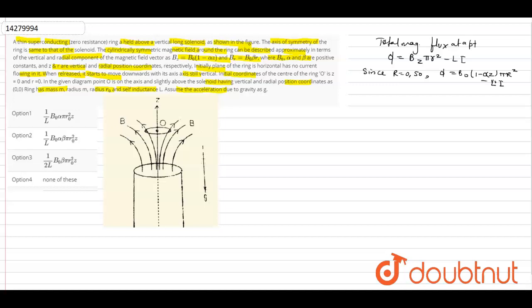So from initial condition, z is 0 and i equals 0, so the equation becomes phi equals B0 alpha z pi r square. Alpha z becomes 0, so it becomes B0 pi r square.